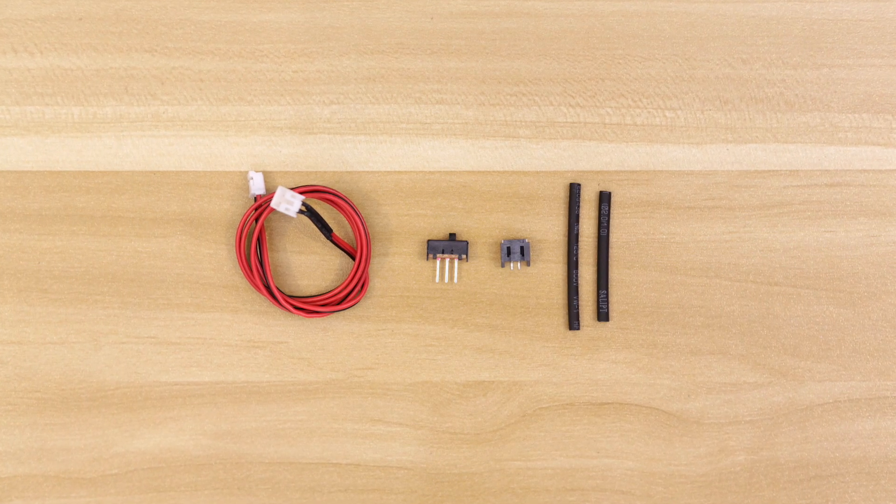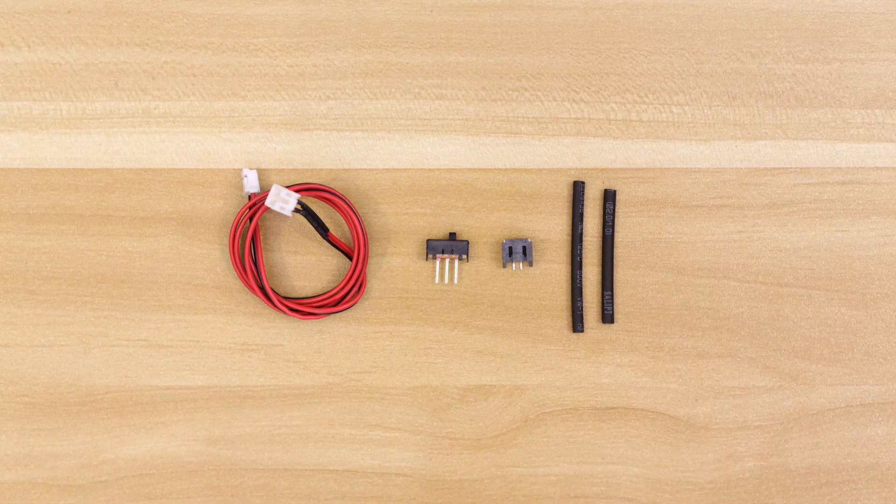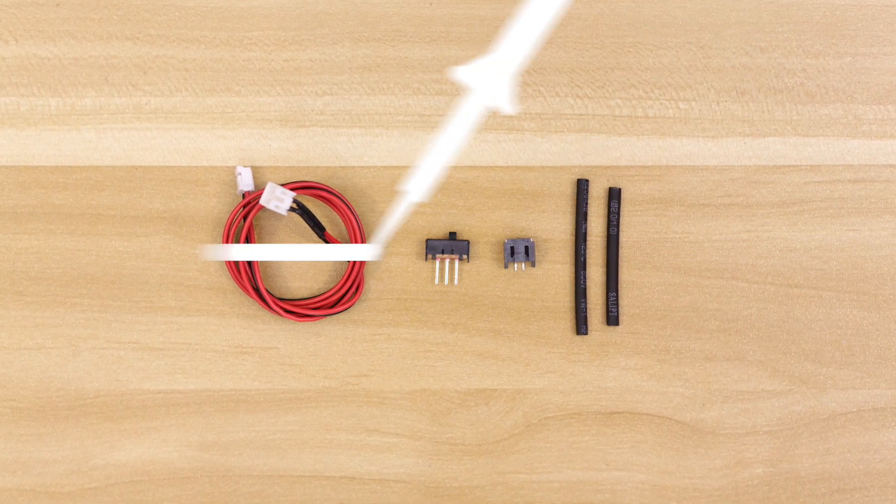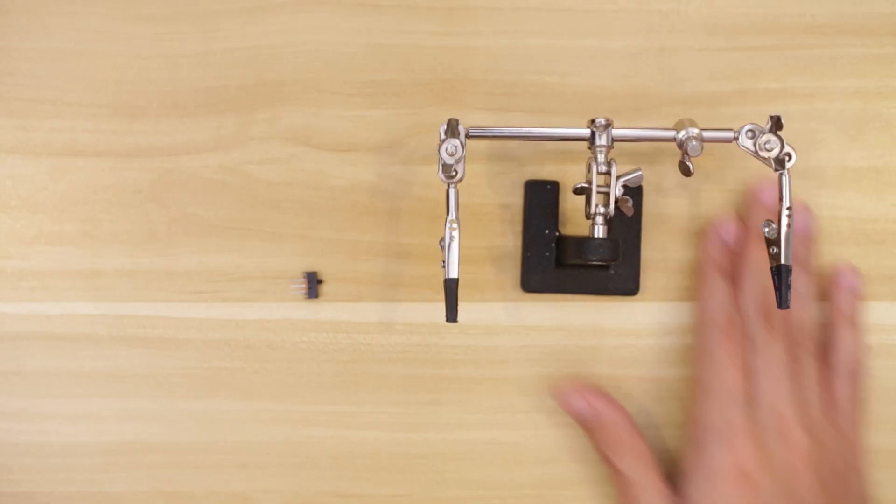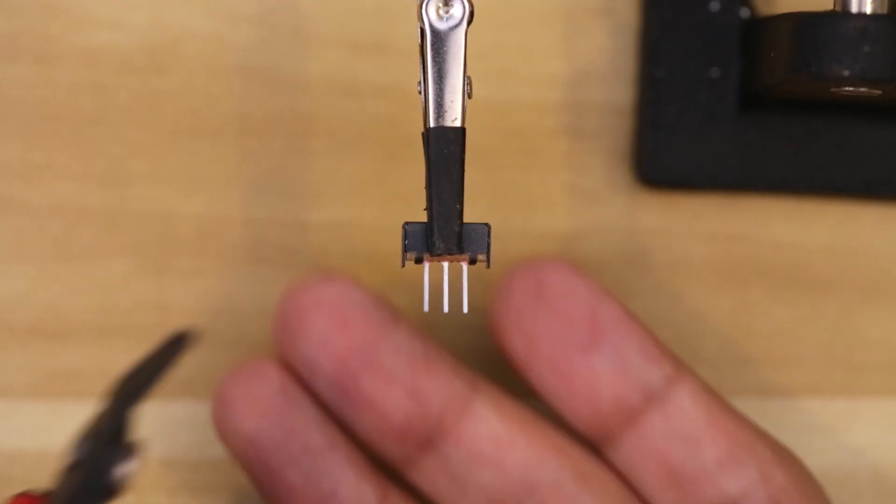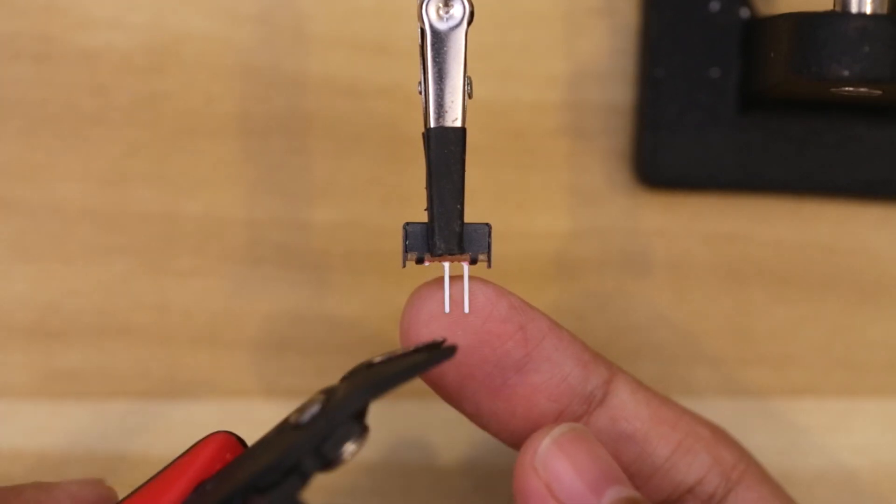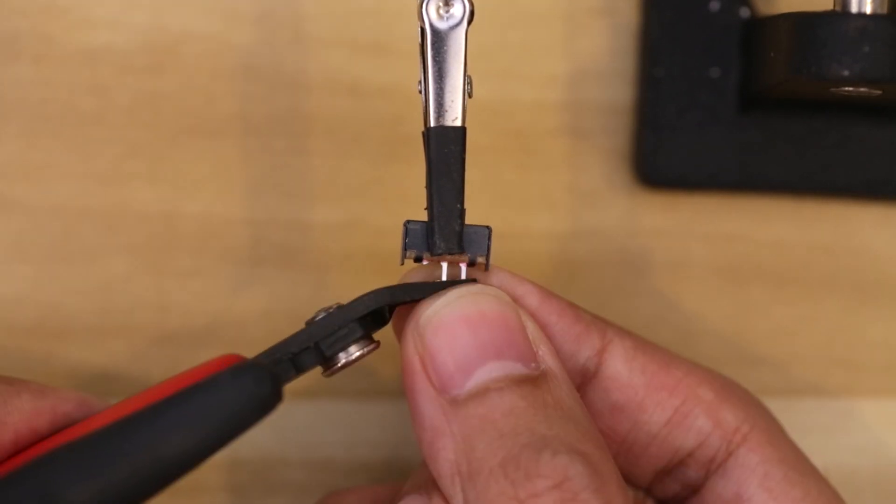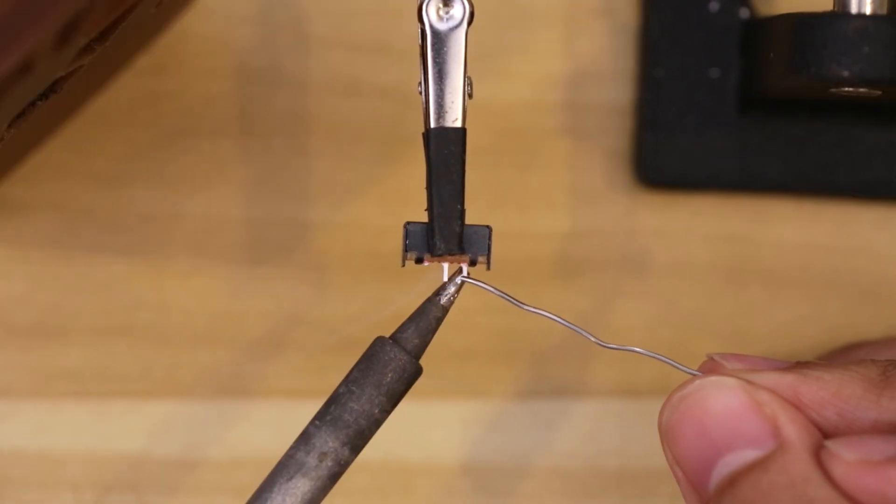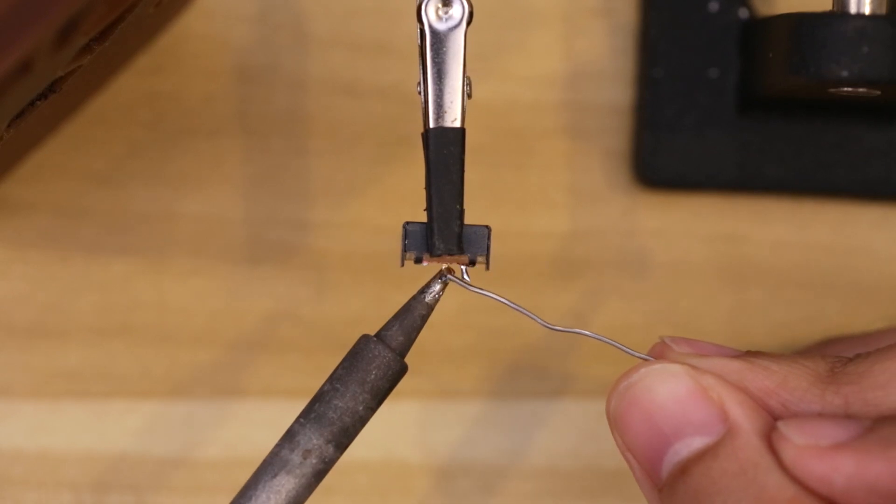So here's all the bits and pieces you'll need to make your very own slide switch JST adapter. So I like to start with the slide switch. I'll secure it to one of the grabbers on the third helping hand and then use a pair of cutters to remove one of the legs. Then I'll cut the remaining two in half. Next we can tin them by applying a tiny bit of solder using the tip of the iron.